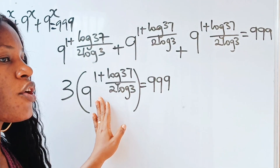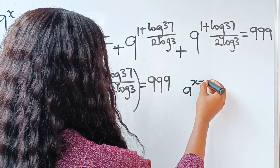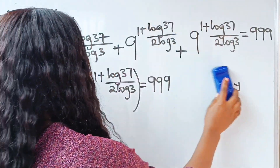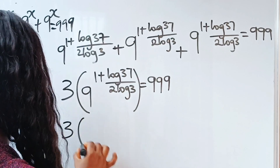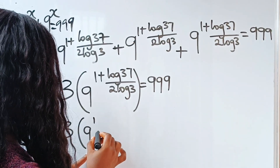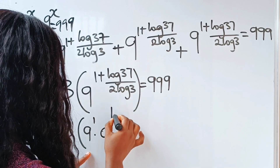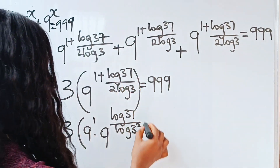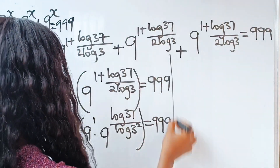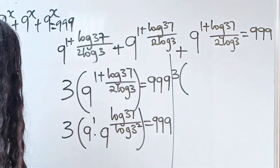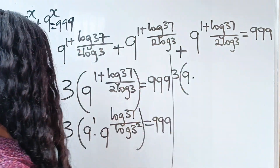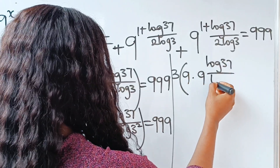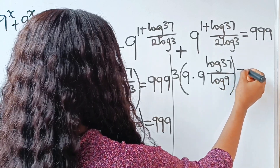According to the law of indices, a^(x+y) = a^x × a^y. Applying this here, we can write 9^(1 + log 37 / (2 log 3)) as 9^1 × 9^(log 37 / log 3²). Since log 3² = 2 log 3, this simplifies to 9 × 9^(log 37 / log 9). So we have 3 × 9 × 9^(log₉ 37) = 999.